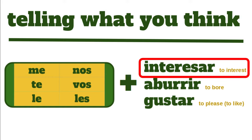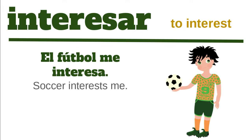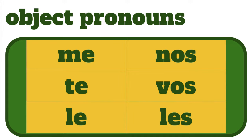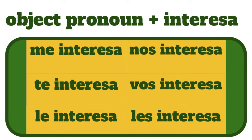The first verb we're going to look at is interesar, which means to interest. We can say, for example, el fútbol me interesa — soccer interests me. When we say that, we use an object pronoun, the word me, which means me. In Spanish, the object pronouns are me, te, le, nos, vos, and les. We always use these with the verb interesar and the other two verbs we'll talk about today. So we say: me interesa, te interesa, le interesa, nos interesa, vos interesa, and les interesa.